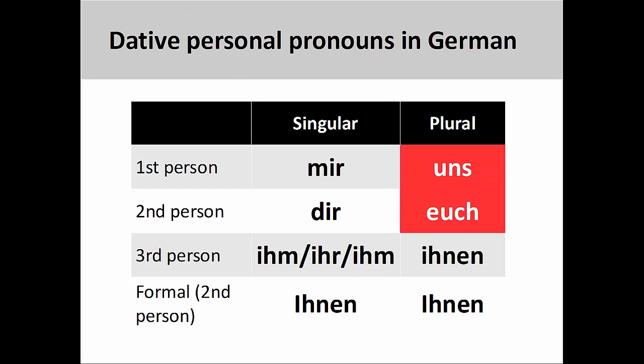The dative personal pronouns are also organized by number, person, and gender. Of these pronouns, only uns, first-person plural, and euch, second-person plural, are similar to the accusative personal pronouns. Because of this similarity, you will need to be careful in distinguishing between the accusative and dative forms.